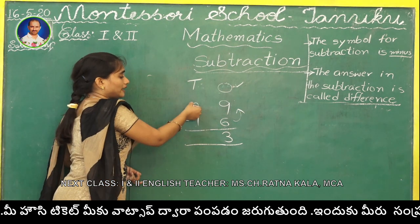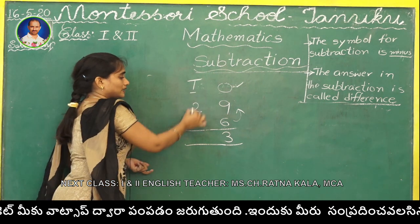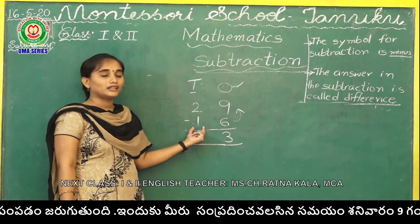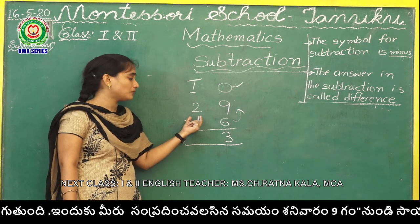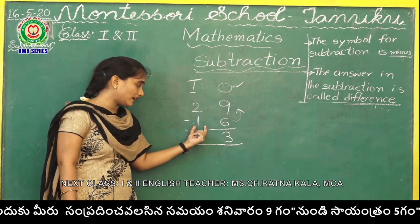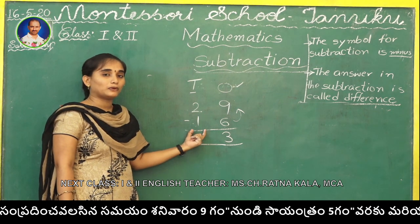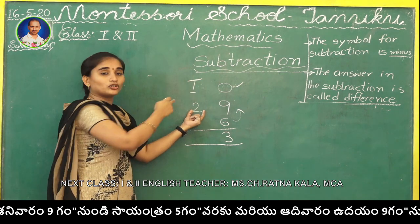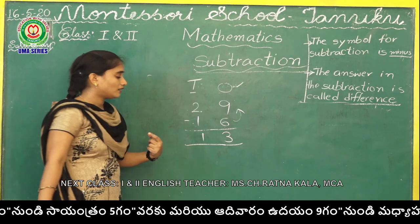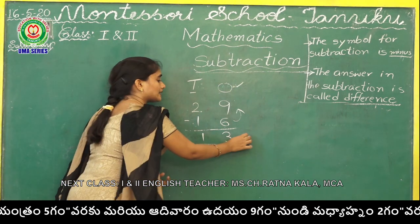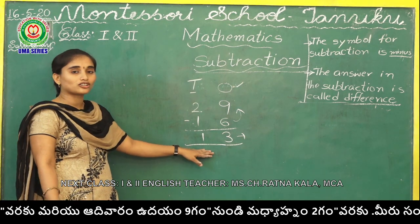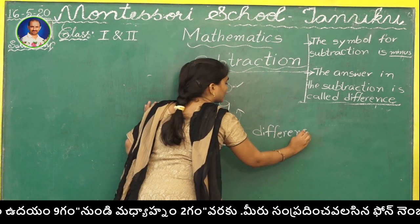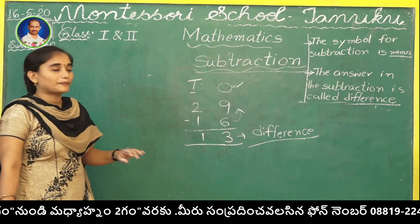Now tens place numbers. What are the tens place numbers? 2 minus 1. We are subtracting 1 from 2. When we subtract 1 from any number, we get the before number. So what is the before number to 2? 1. So the answer is 13. This answer is called difference. What is the answer in subtraction called, children? Difference. And the symbol is minus.